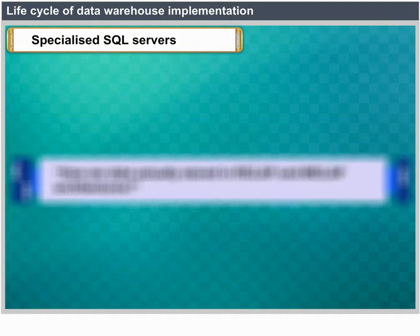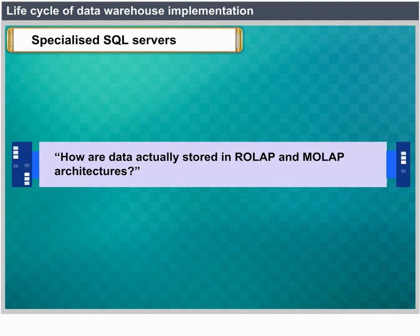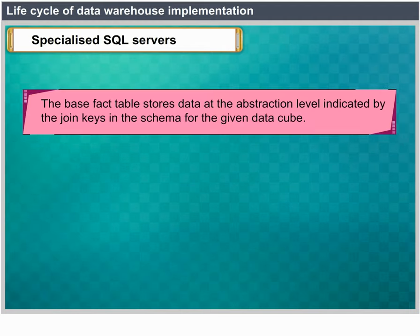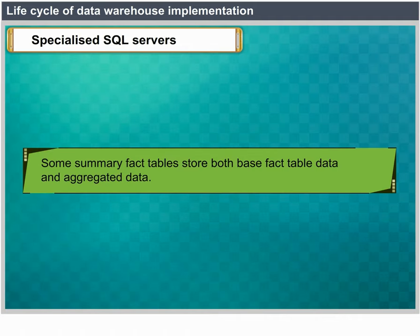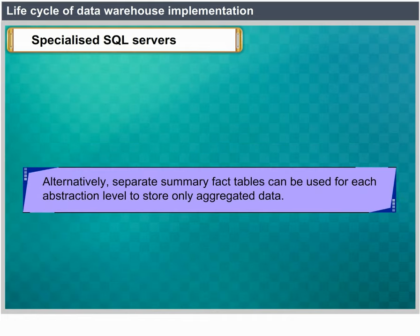How are data stored in ROLAP and MOLAP architectures? The base fact table stores data at the abstraction level indicated by the join keys in the schema for the given data cube. Aggregated data can also be stored in fact tables referred to as summary fact tables. Some summary fact tables store both base fact table data and aggregated data; alternatively, separate summary fact tables can be used for each abstraction level to store only aggregated data.